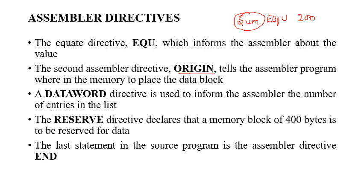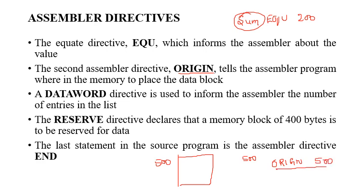The next assembler directive is the origin directive. Suppose you want to load initial data from location 500 — you need to start loading the program from address 500 of the memory. This can be done using the assembler directive ORIGIN followed by the address. This indicates that the program or data has to be loaded into memory starting at address 500, and the first data will be stored at address 500, continuing based on the size of the data.